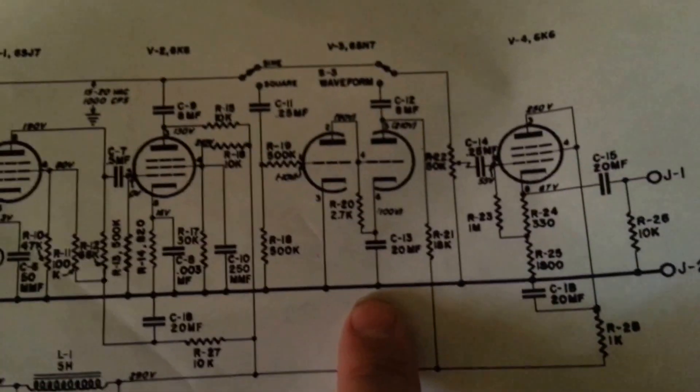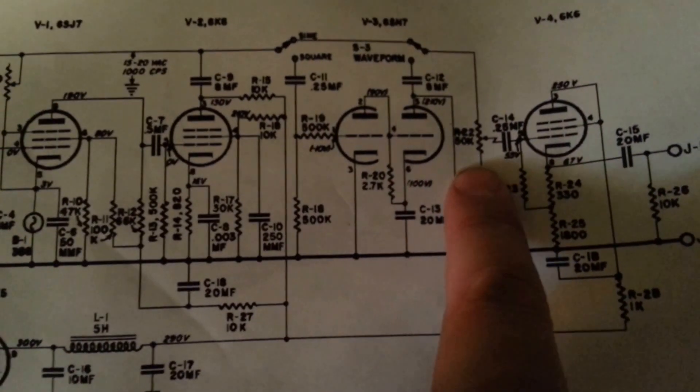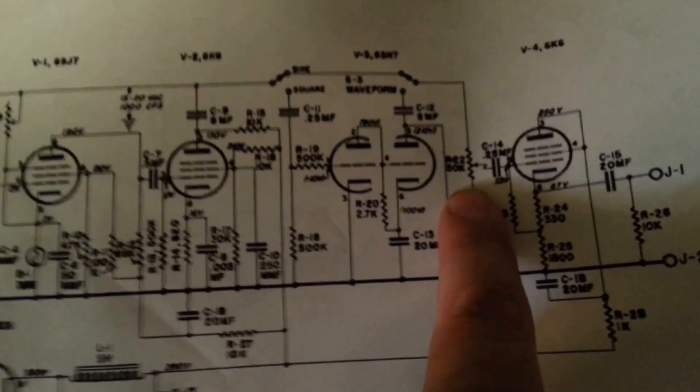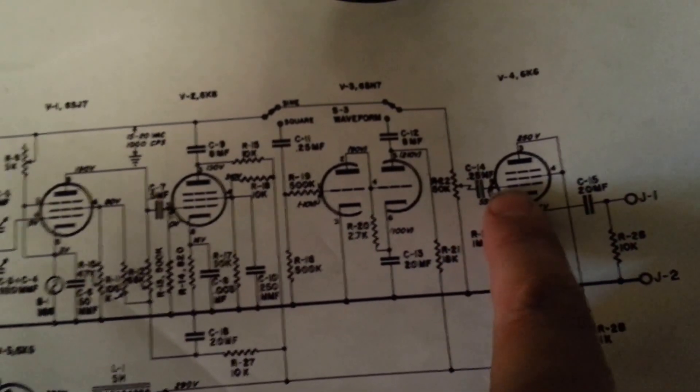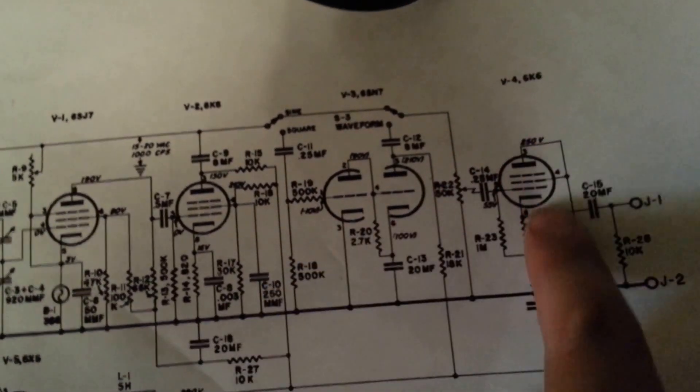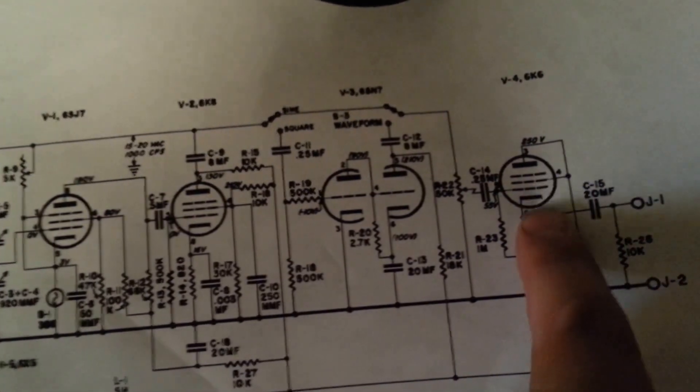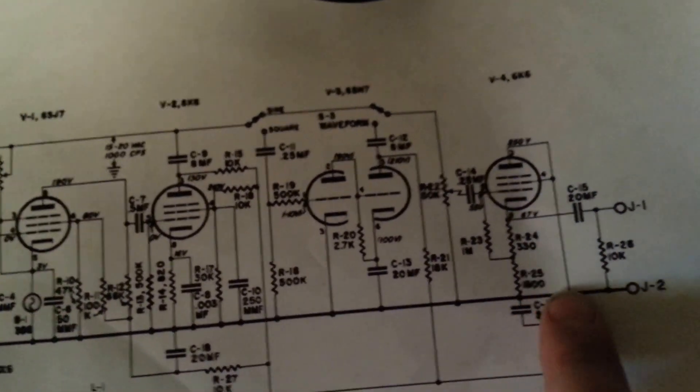Then it passes through another variable resistor which controls the output. It's coupled through this capacitor into one of the grids of the final tube, which is a 6K6.